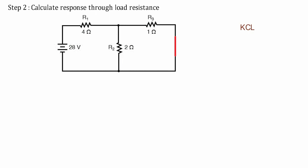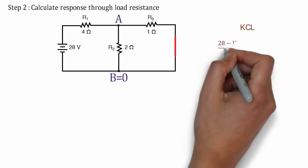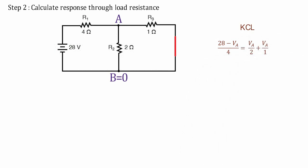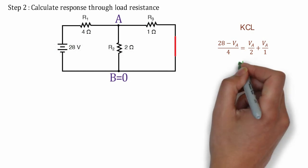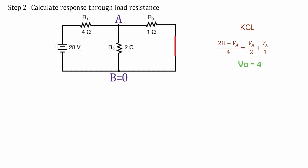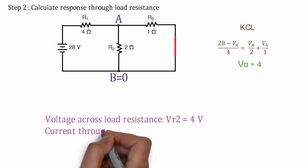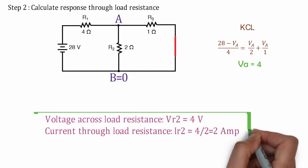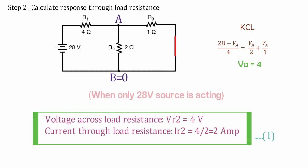As shown in the circuit diagram, two nodes are represented and nodal equation is as mentioned. After solving this equation, we are getting 4V as a load voltage and by using ohm's law, we are getting 2A as a load current. These are the response when only one source is acting.